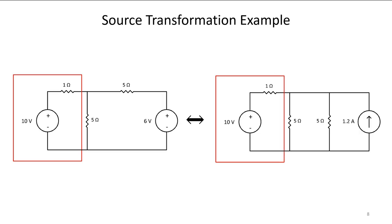In the following transition, V equals IR, so I is equal to V divided by R. Six divided by five is 1.2 amps. The resistor comes down in parallel.